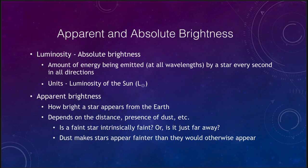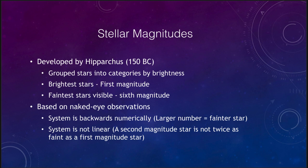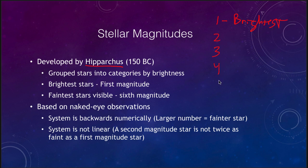To measure brightness, astronomers use the system of stellar magnitudes. These were started by the Greek astronomer Hipparchus back in the second century BC. What he did was group stars into categories by brightness — his brightest stars were in the first category, and then he had categories two, three, four, five, and six. Sixth magnitude were the faintest stars visible to the naked eye, long before the time of telescopes. The brightest stars were of the first magnitude and the faintest were of the sixth magnitude.